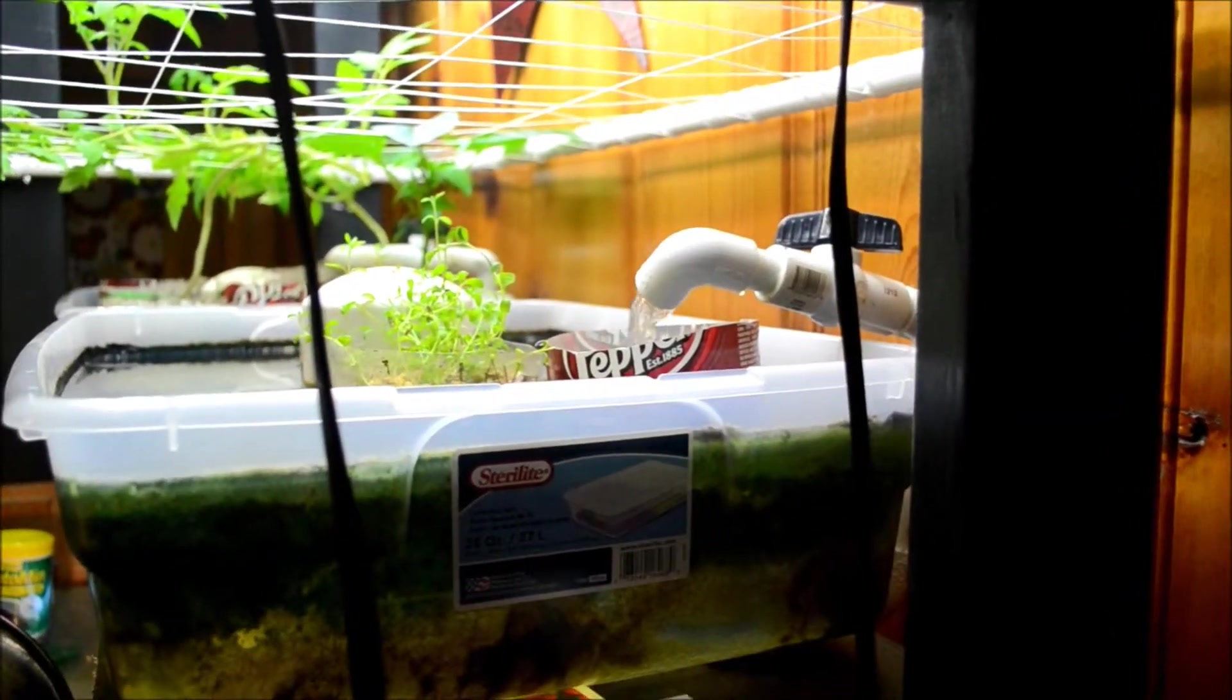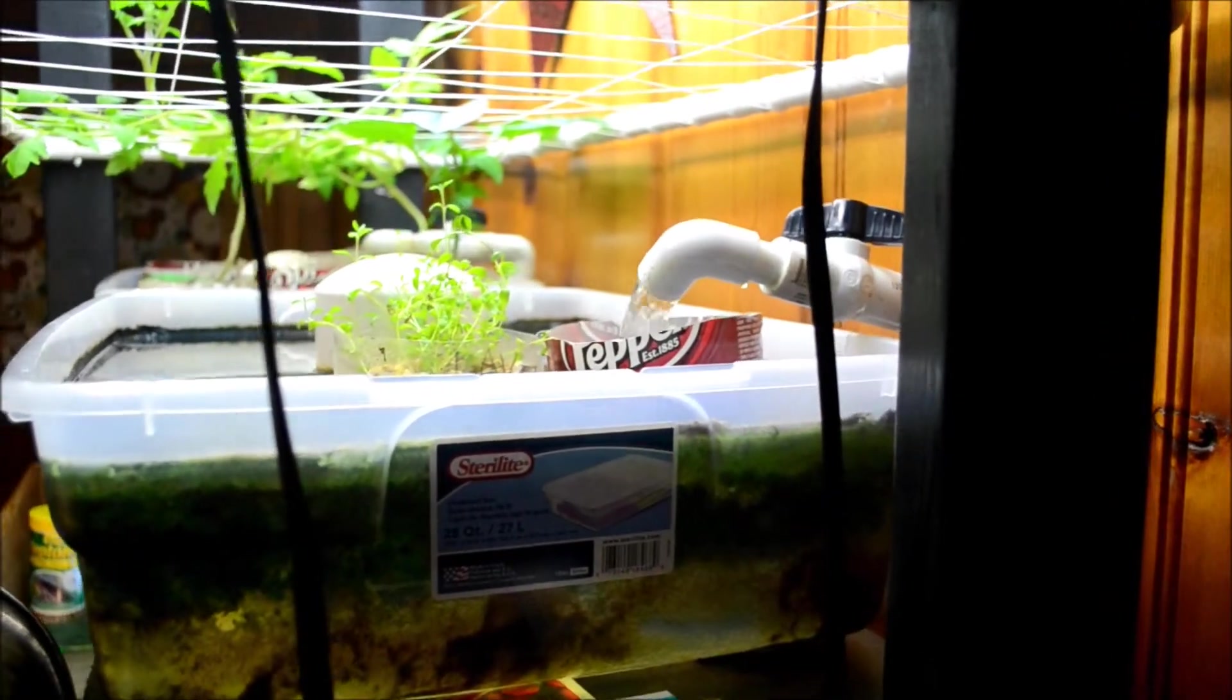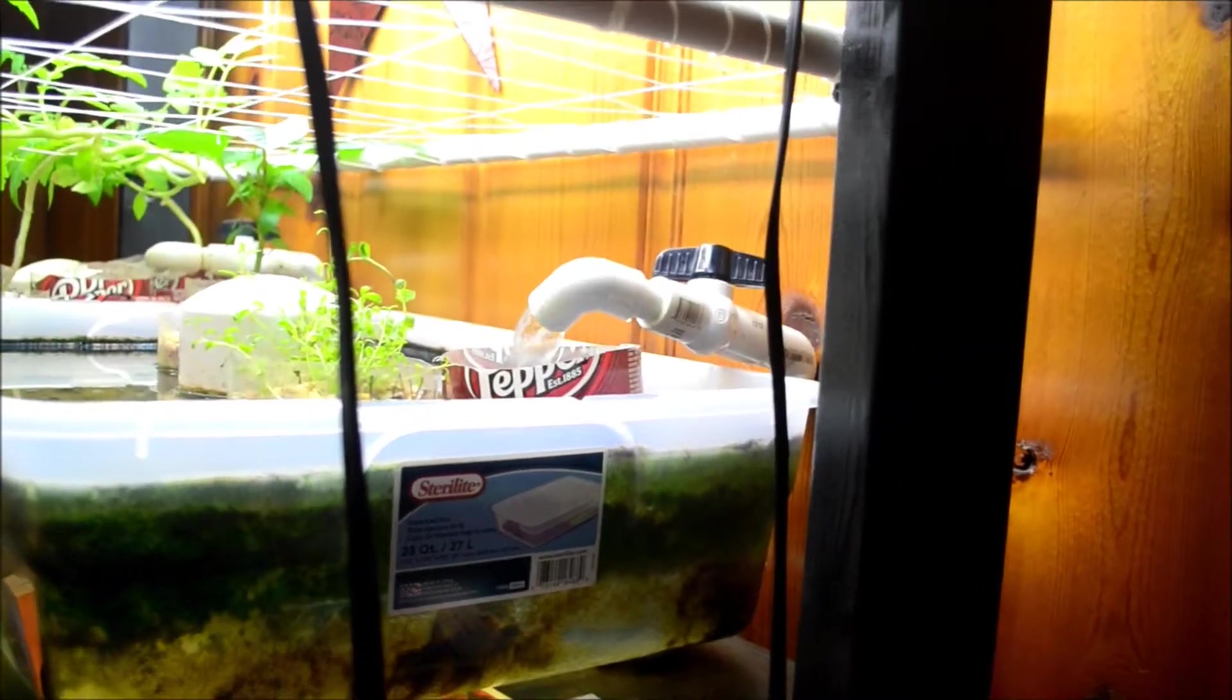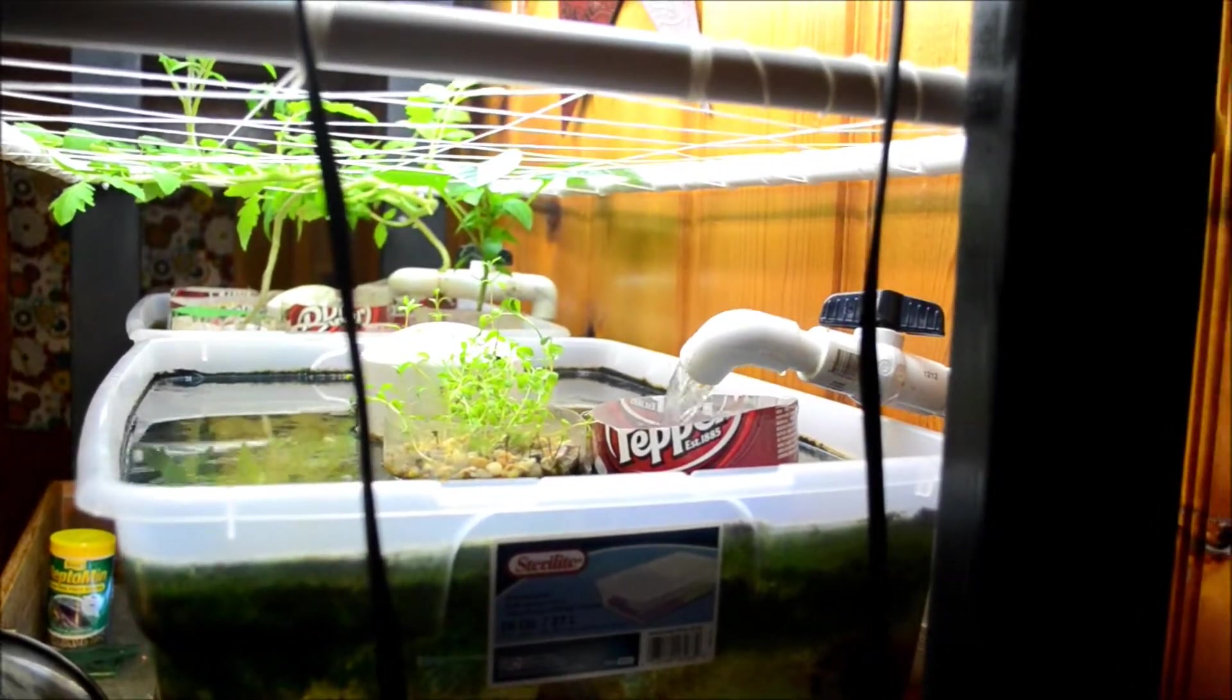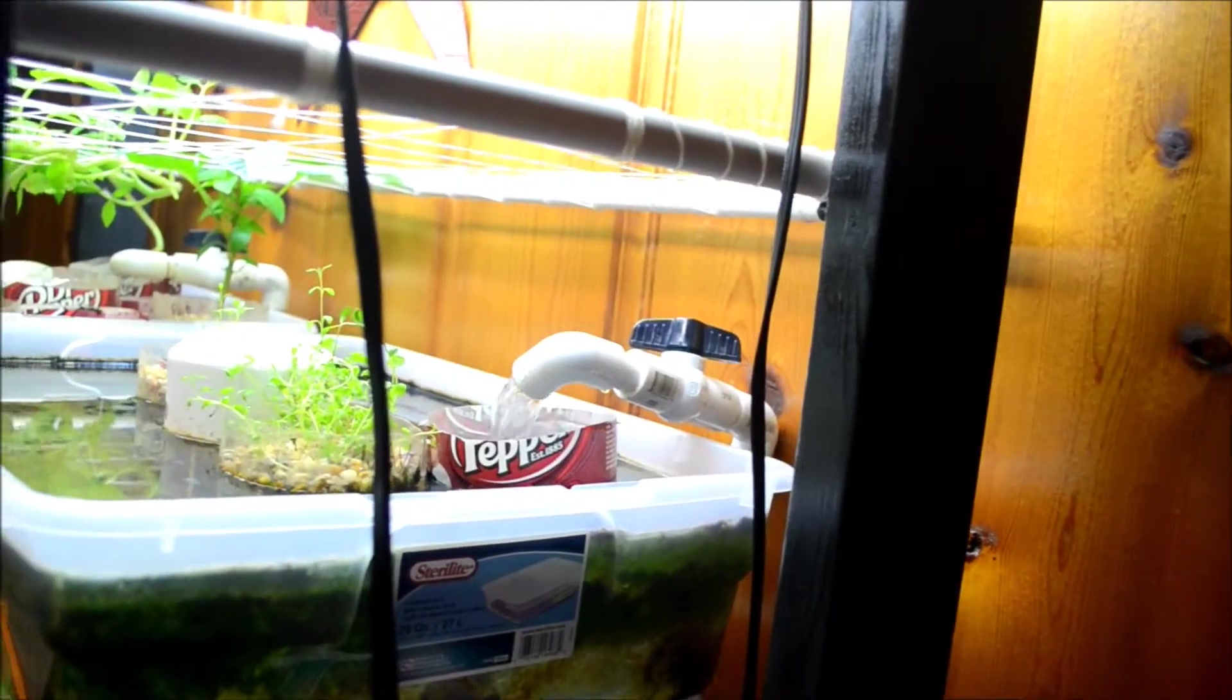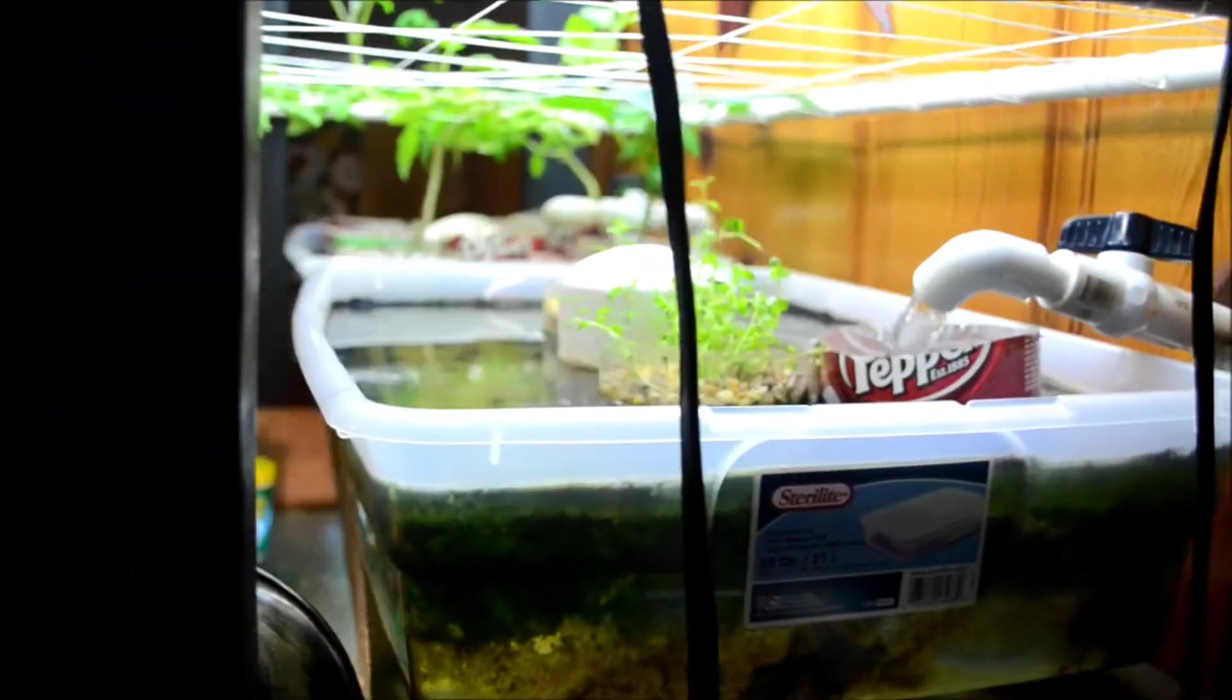So you definitely need the ability to choke back some of the pressure on the pump, because you're not going to find a pump that has perfect pressure. You can if you do enough research and whatnot, know exactly what your head height is and where your plumbing's actually going to sit when everything's set up. But I mean, this is really a much easier method. It takes a lot of the guesswork out of it. You can just tone back some of the pressure and then you have perfect flow in your grow beds.